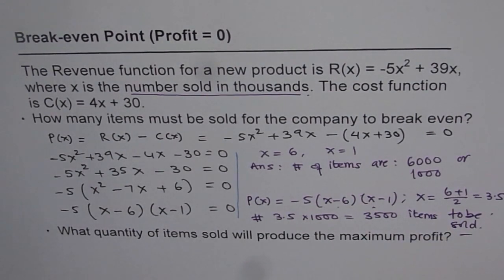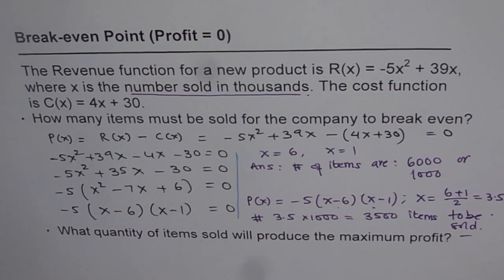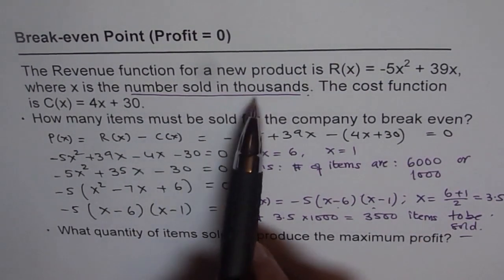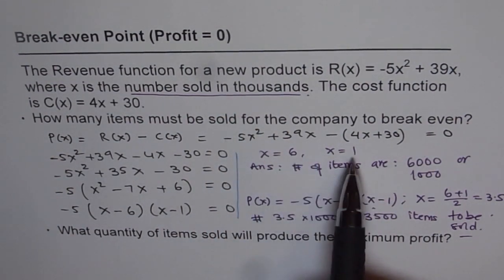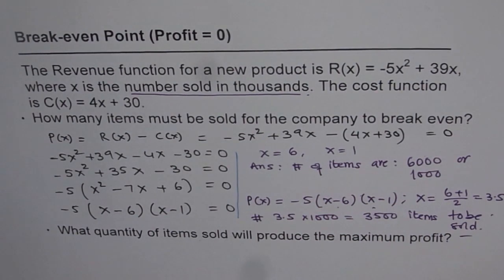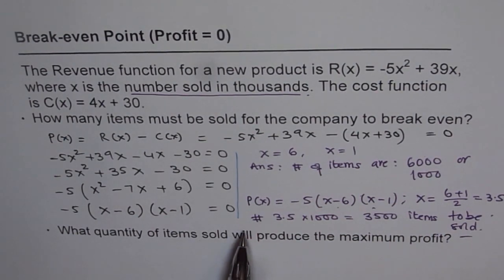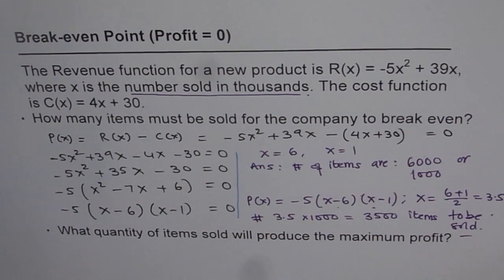So that is the answer for this question. I hope you understand how to do this question. It is a very simple question. The only thing is, don't forget about the units. So I have seen sometimes students will just write x equals 6 and 1 and end the question. You have to write very clearly your answer and thousands is the unit. Thank you and all the best.